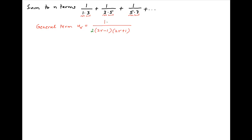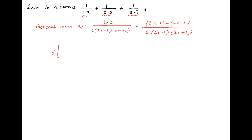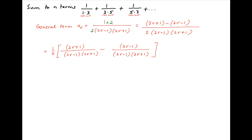Now multiplying the numerator and denominator of this general term u_r by 2, the numerator can be rewritten as 2r plus 1 minus 2r minus 1, and the denominator remains the same as 2 times (2r minus 1) times (2r plus 1). Now u_r can then be broken into two components: the first is half of (2r plus 1) divided by (2r minus 1)(2r plus 1), and the second is (2r minus 1) divided by 2 times (2r minus 1)(2r plus 1).